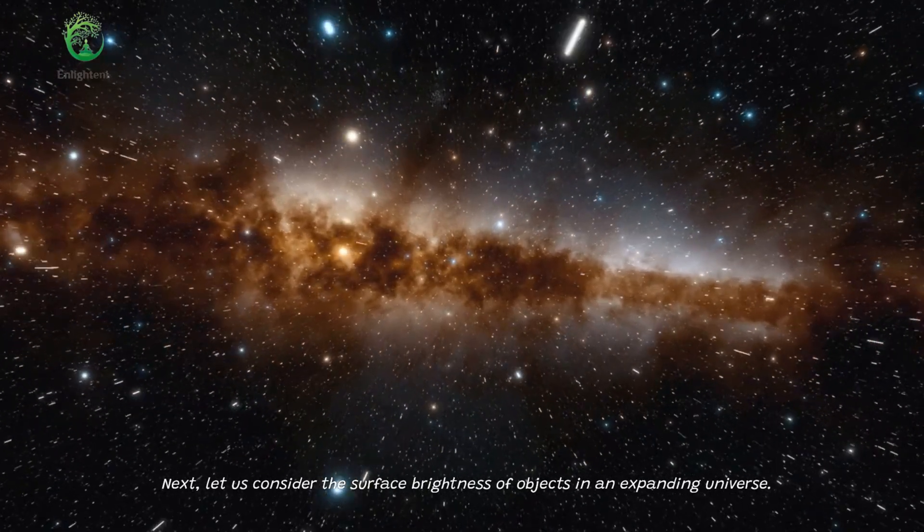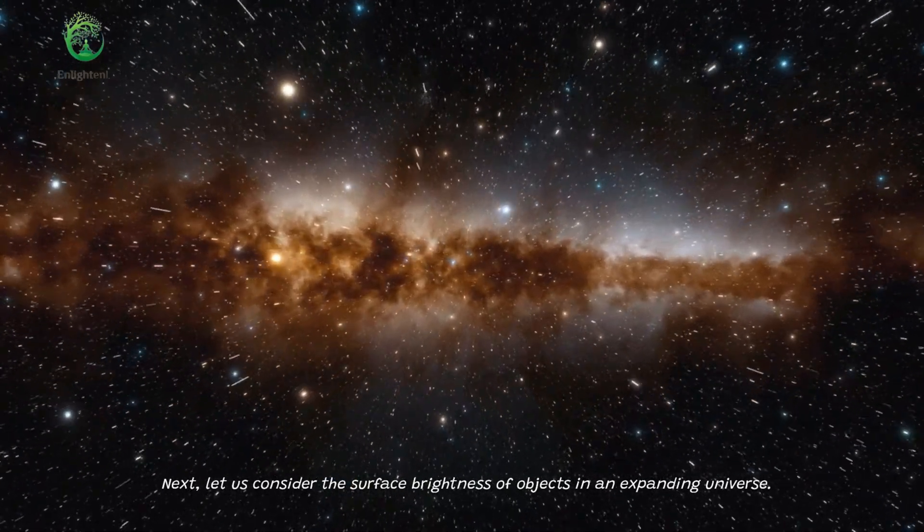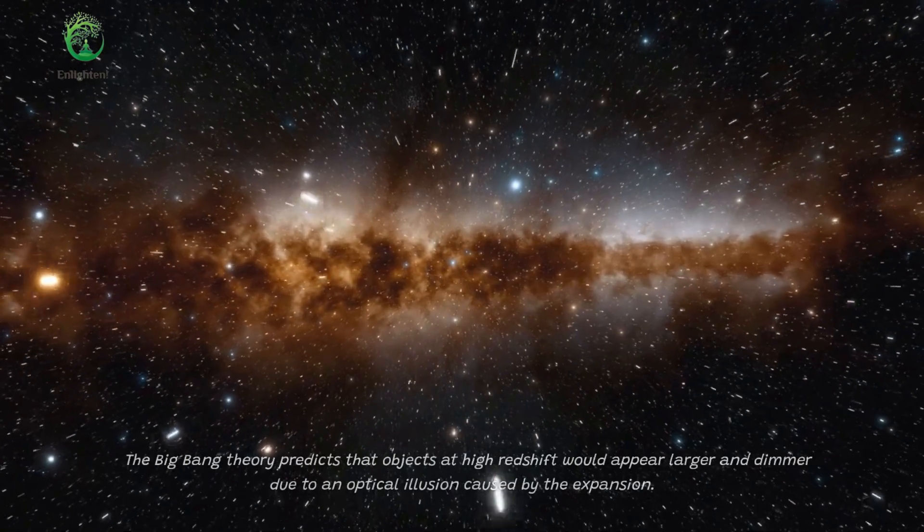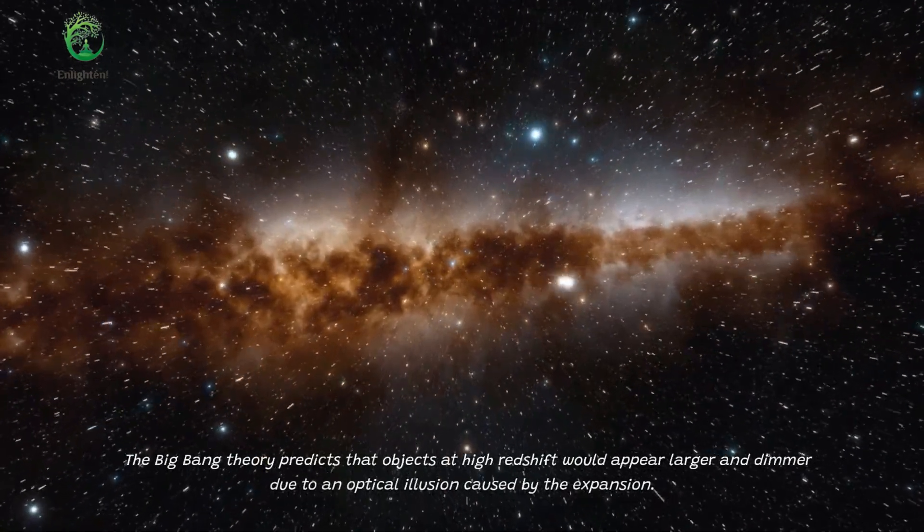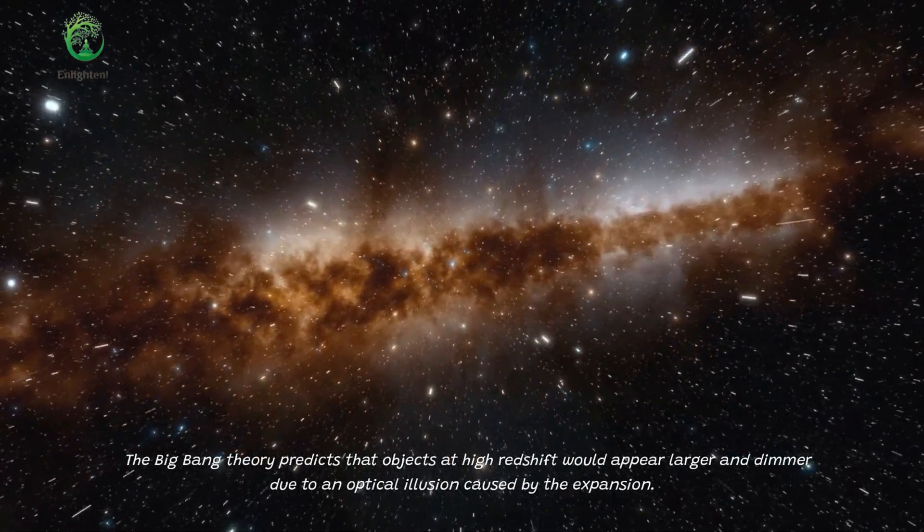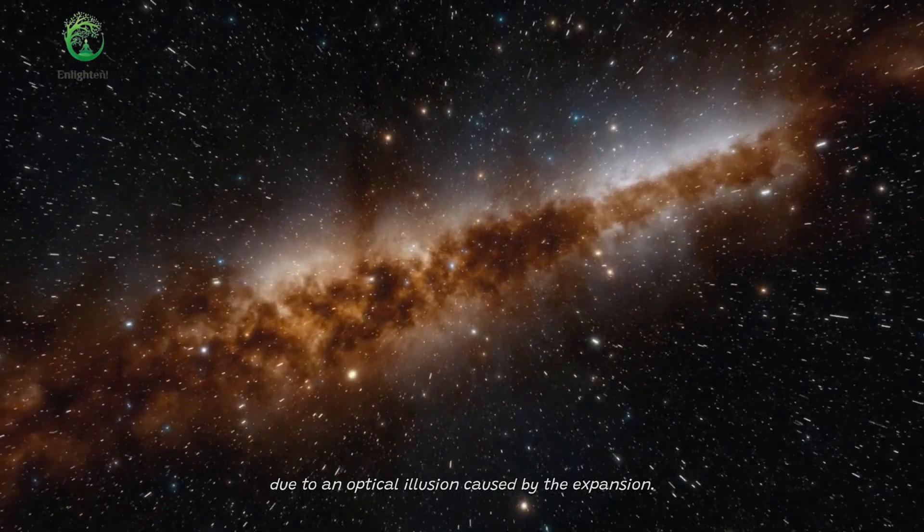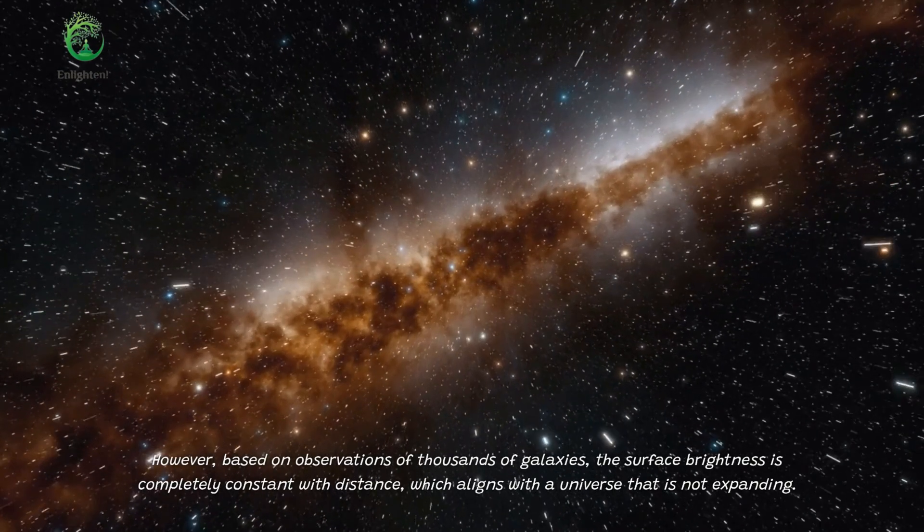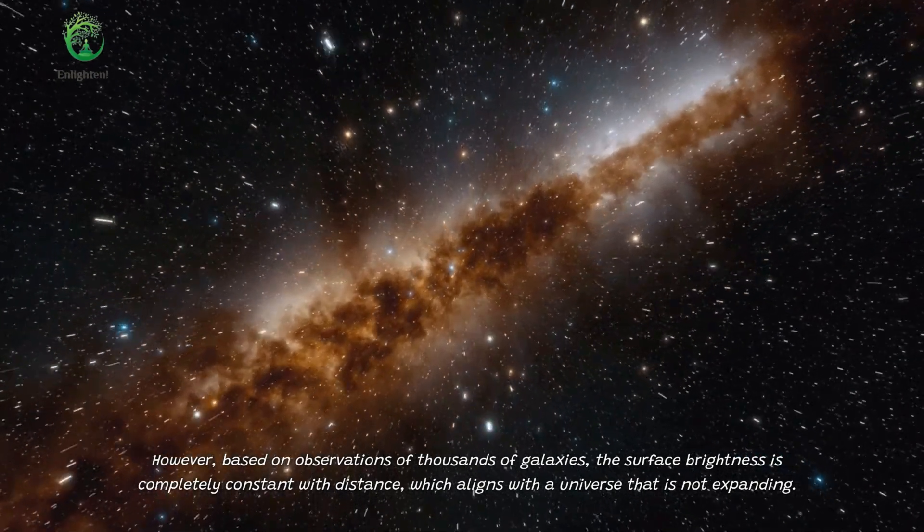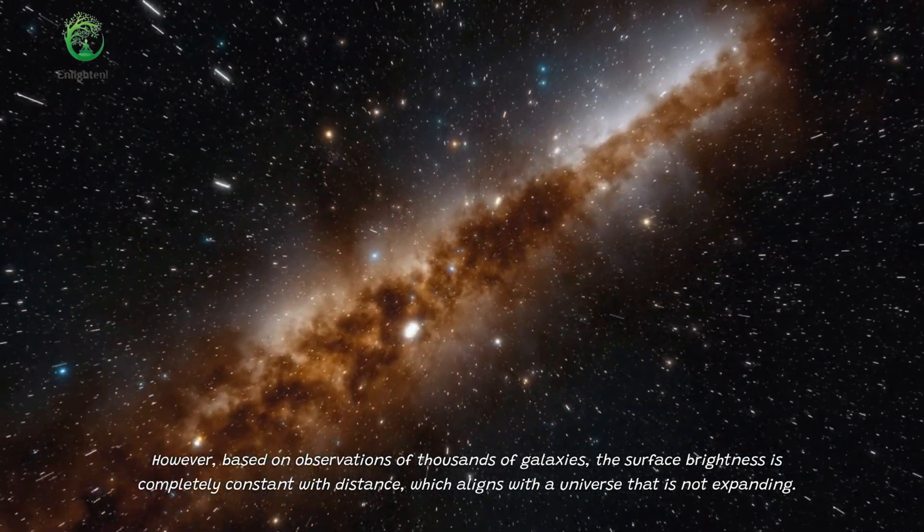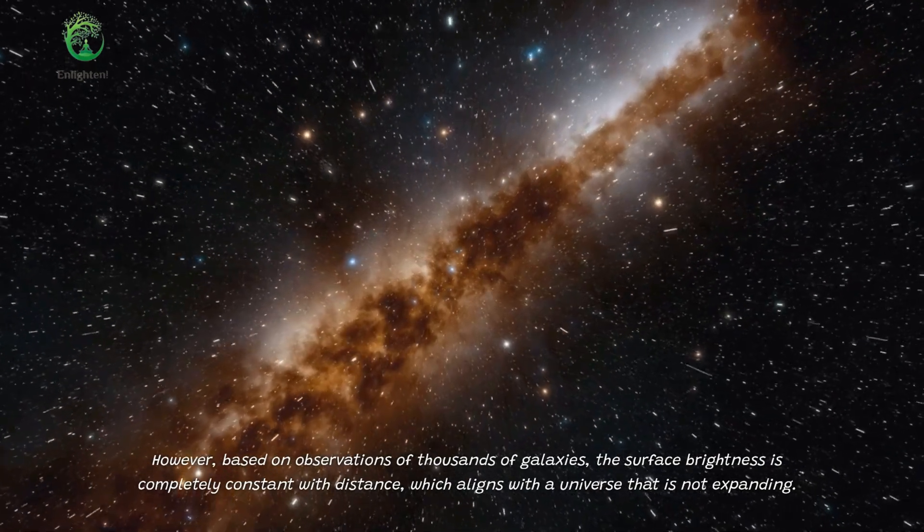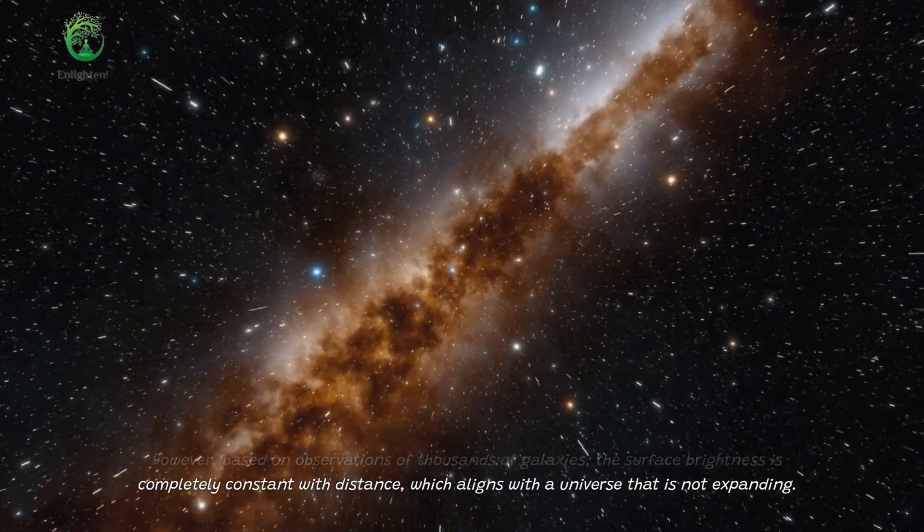Next, let us consider the surface brightness of objects in an expanding universe. The Big Bang Theory predicts that objects at high redshift would appear larger and dimmer due to an optical illusion caused by the expansion. However, based on observations of thousands of galaxies, the surface brightness is completely constant with distance, which aligns with a universe that is not expanding.